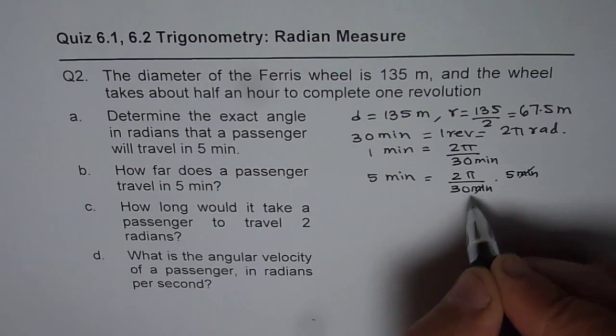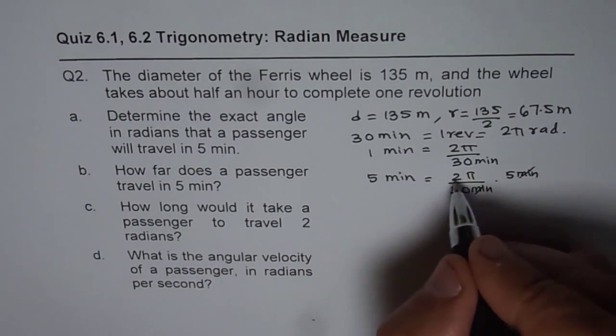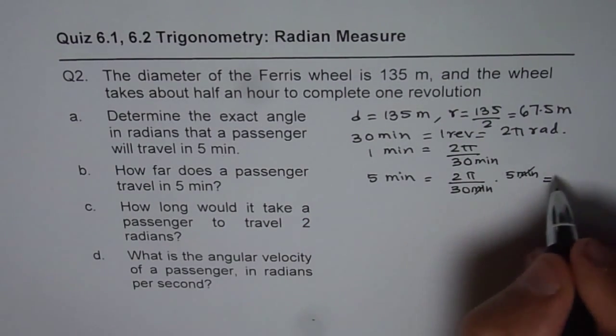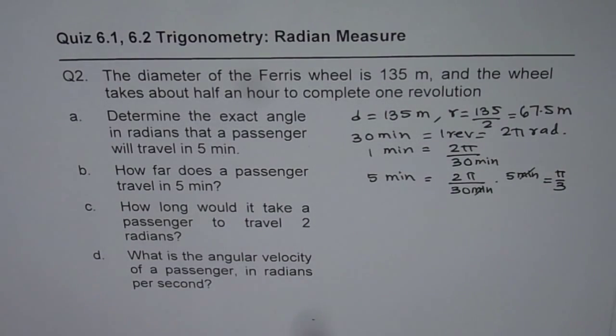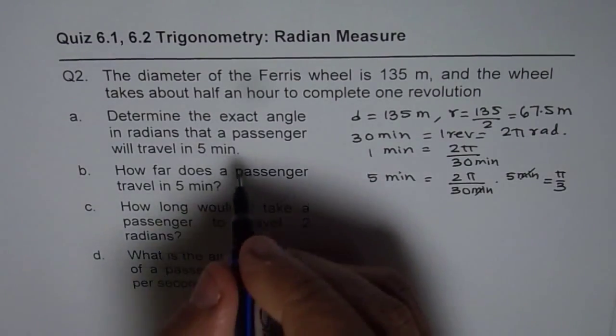When you simplify, minutes gets cancelled. Five times 2 is 10. So we get π by 3 radians. So the answer for the first one is π by 3 radians.